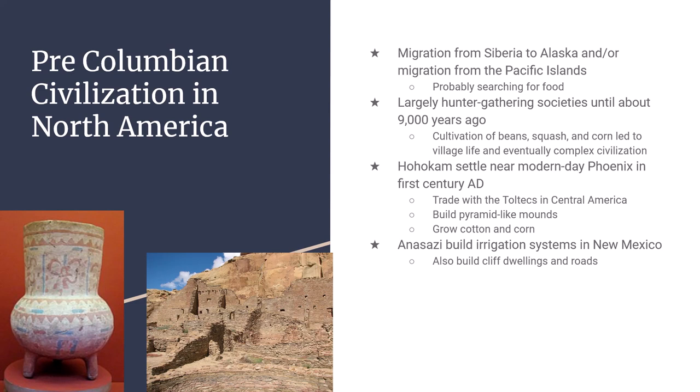Regardless of how they got here, for quite a while the people in North and South America were living in hunter-gathering societies, meaning they had to find and forage for all of their food. The idea of farming and agriculture is, historically speaking, very recent — some parts of North America did not start large-scale agriculture until a thousand years ago. Eventually, cultivation of things like beans, squash, and corn led to population increases and increasingly complex civilizations.